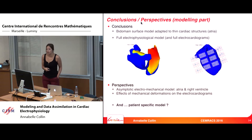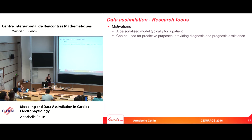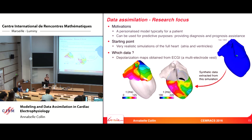When you have very realistic simulations, you want to adapt them to each patient. This is the second part of my talk. The objective is to personalize a model for a patient and provide this information to the doctor to help with prediction, diagnostics, and prognostic assistance. The starting point is a very realistic simulation of the full heart.